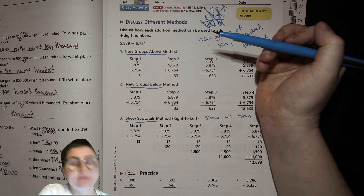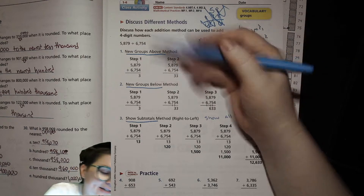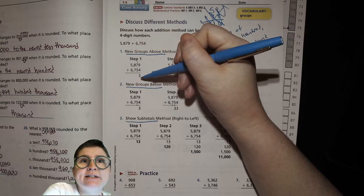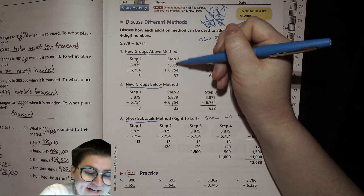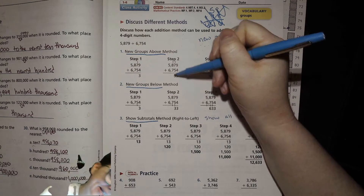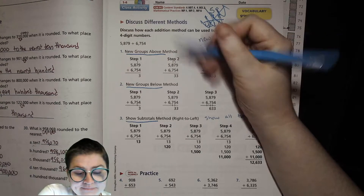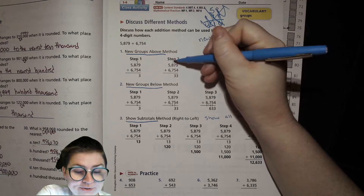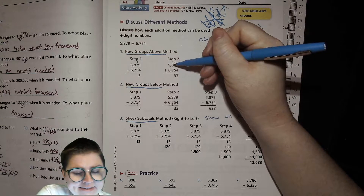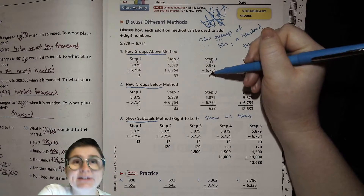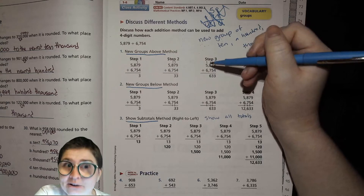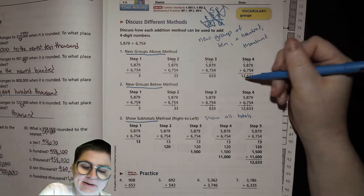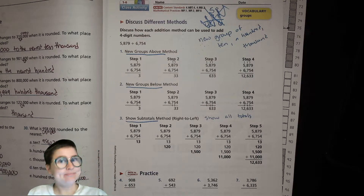New groups above — this is probably what your parents are most familiar with and many of us prefer this method. You add up the ones place: the three stays in the ones place, and that new ten joins the tens place. Seven plus five is twelve, then you add one more for thirteen. When you have thirteen tens, the ten tens is actually 100, so one goes in the hundreds. One plus eight plus seven is sixteen, so sixteen hundreds — the six stays, and the ten hundreds join the thousands, giving you 12,633.